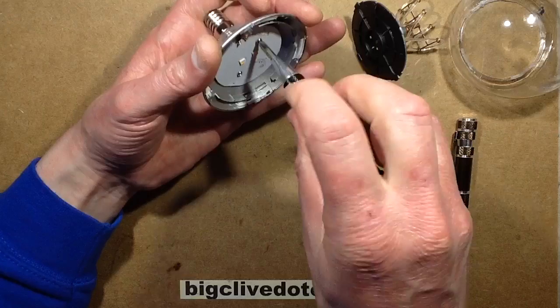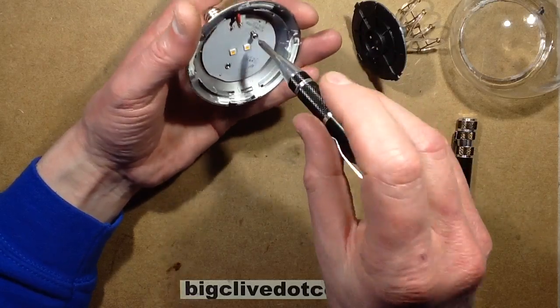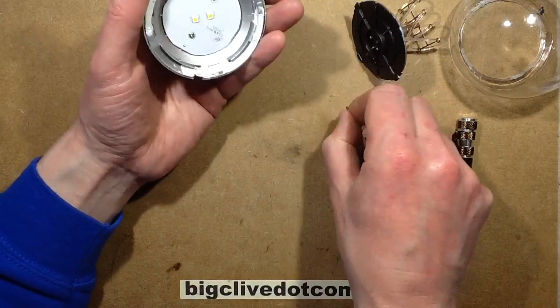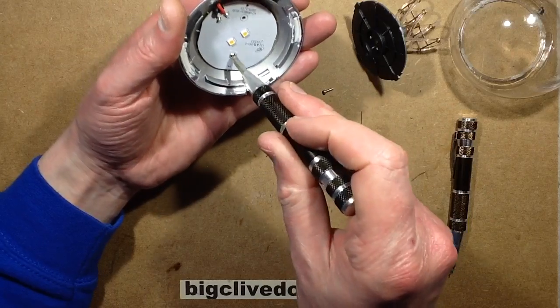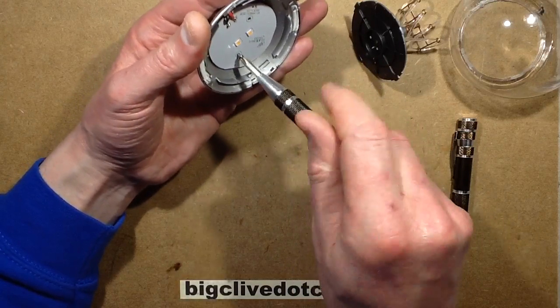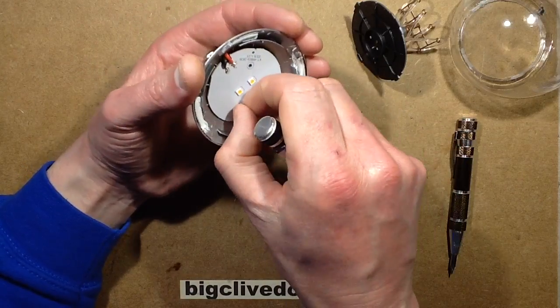Couple of screws. Don't think it's going to be a capacitive dropper. Buck regulator? I'm not sure. The only way to find out is to open this.